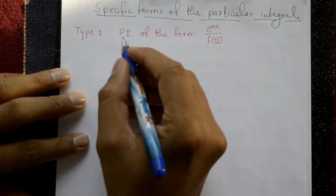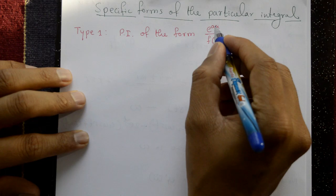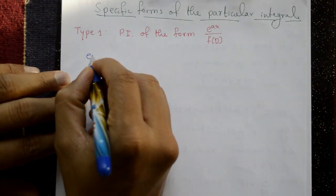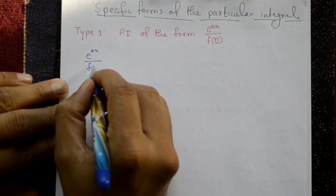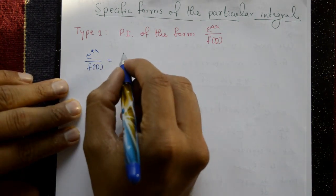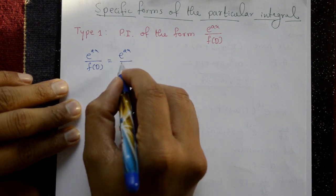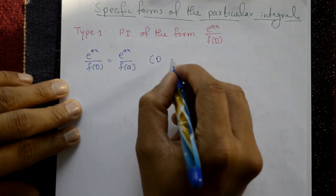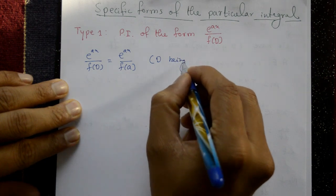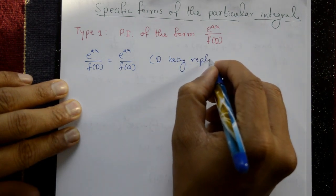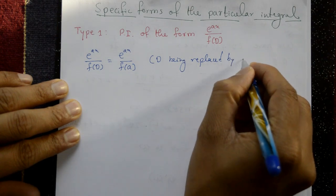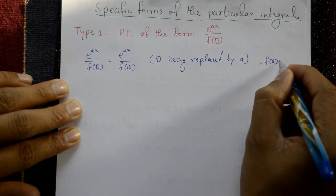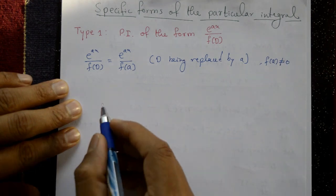The concept is: the given form e^(ax) upon f(D) is equal to e^(ax) upon f(a), meaning D is replaced by a. This is possible when f(a) is not equal to 0.